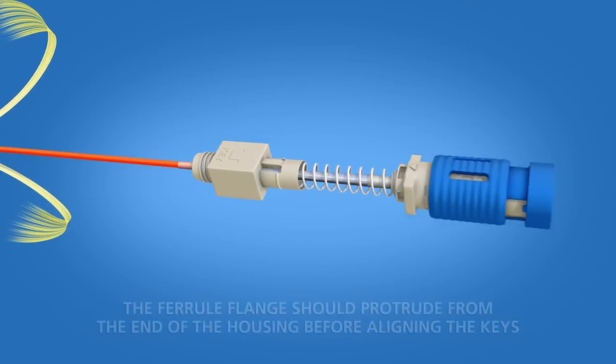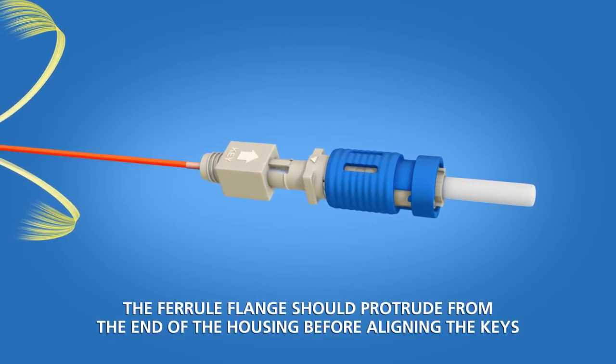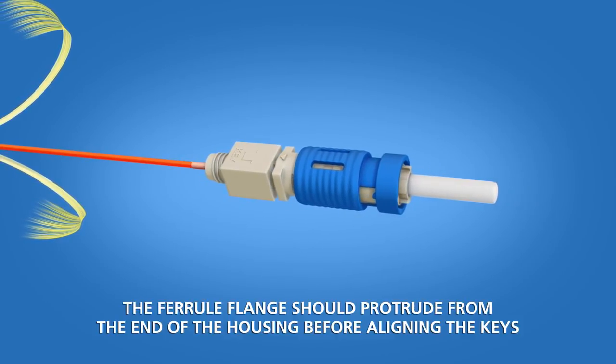Slide the connector housing onto the spring unit. The key and the small arrow on the housing should align. Push until a click is heard.